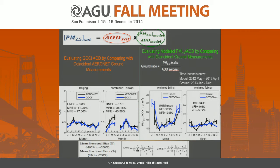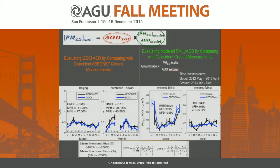We do the comparison at two stations: Beijing and Taiwan combined, due to the lack of data at individual stations. In the AOD comparison plot, the small numbers represent the number of observations in each month. The GOSI AOD captures the seasonal variation in AERONET AOD at both stations, whereas the bias in Taiwan is slightly larger than in Beijing, probably due to the short number of observations in each month.